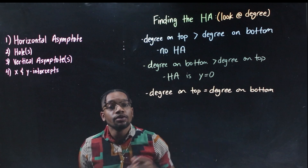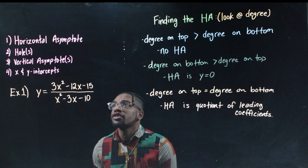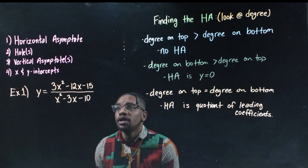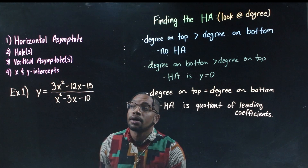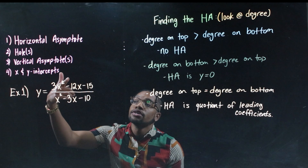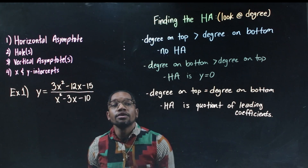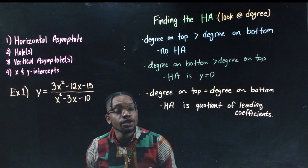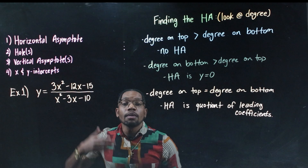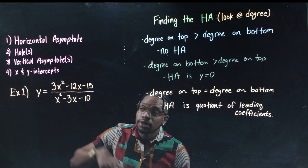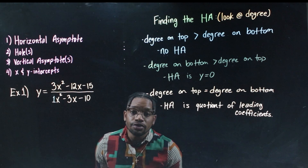Whatever you get from that division is your horizontal asymptote. Looking at this first example, my highest exponent in the numerator is 2, same in the denominator — so the degrees are equal. I take the top leading coefficient divided by the bottom leading coefficient: 3 divided by 1 equals 3. So my horizontal asymptote is y equals 3.